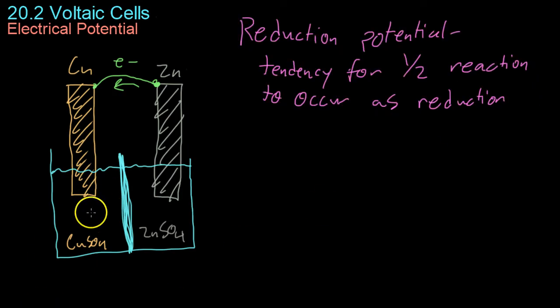Moving on to individual electrode potentials, in this zinc-copper reaction that we use as the prime example, the two metals have a different tendency to accept electrons. In other words, this copper will take the electrons more readily. That's why the electrons flow from the zinc into the copper and form the solid copper. This is because it has a higher reduction potential, which is the tendency for a half reaction to occur as reduction.